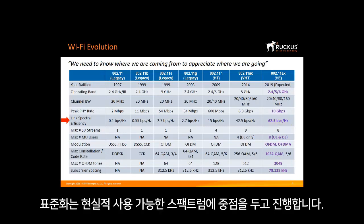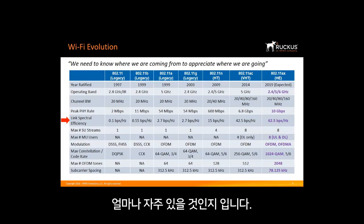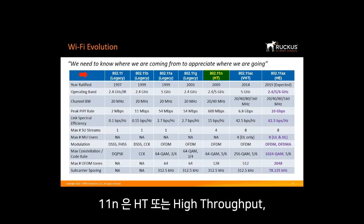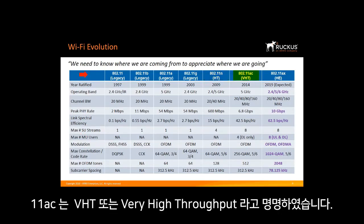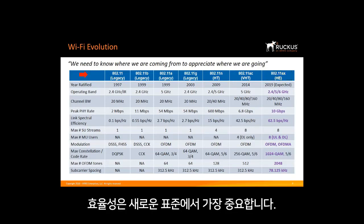The standard is becoming more efficient in utilizing the available spectrum — this is what matters most. The overall spectrum performance is also indicated by the name of the standard: 11n is called HT or High Throughput; 11ac came along and was called VHT or Very High Throughput; and 11ax is called HE for High Efficiency. Efficiency is the big thing in the new standard.